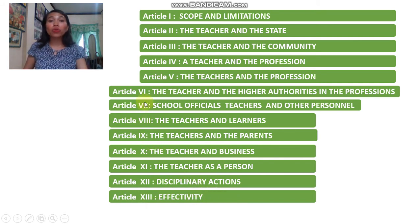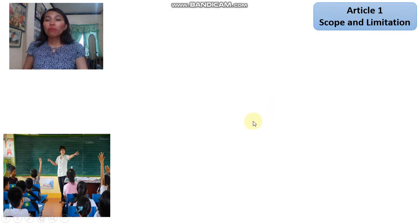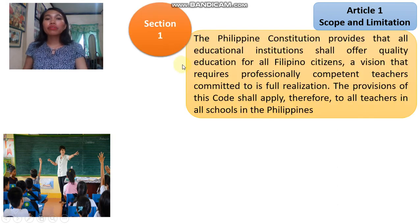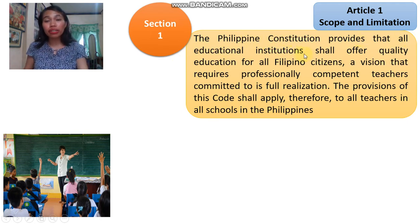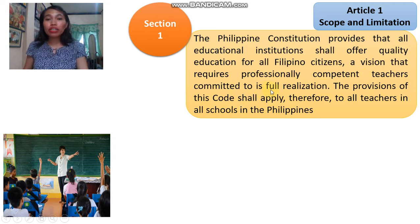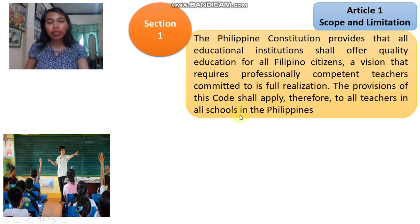As a teacher, you have to know and be familiar with these 13 articles under the Code of Ethics. We will now focus on Article 1: Scope and Limitation. Section 1 states that the Philippine Constitution provides that all educational institutions shall offer quality education for all Filipino citizens — a vision that requires professionally competent teachers committed to its full realization. The provisions of this code shall apply to all teachers in all schools in the Philippines.